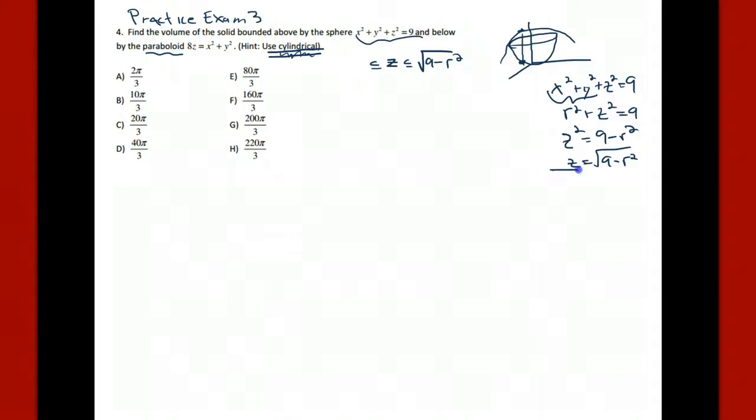The lower bound is the paraboloid. So 8z is x squared plus y squared. And so we just divide by 8 and change this numerator to r squared. And so z is going to be r squared over 8. Okay, great.